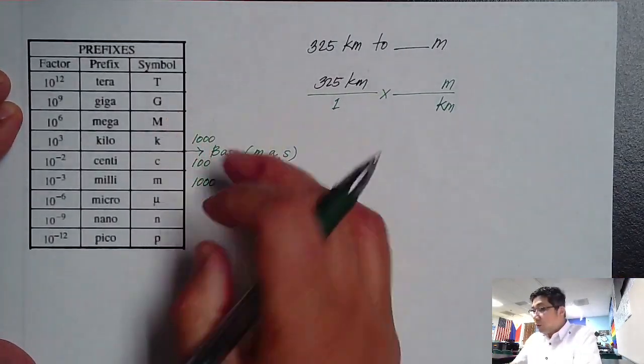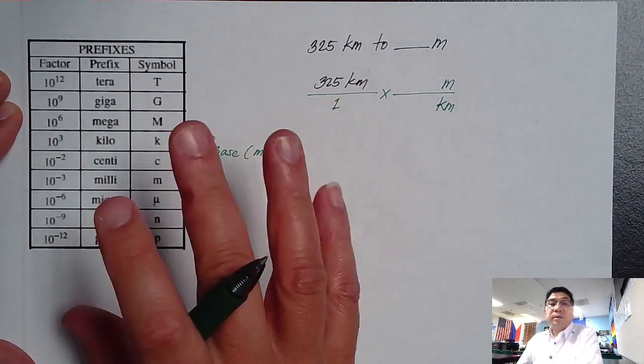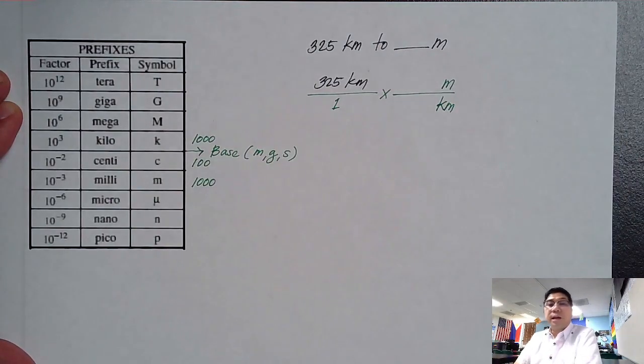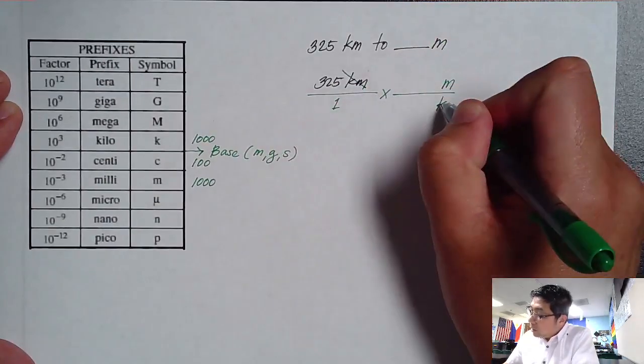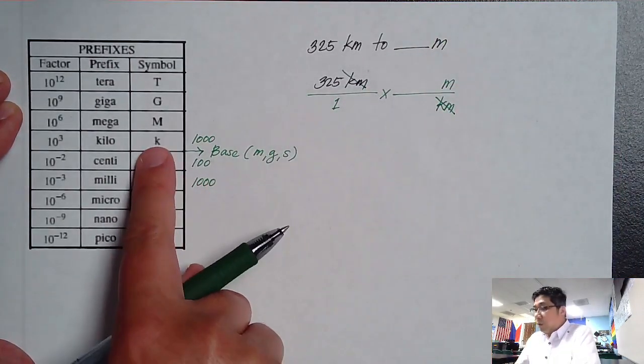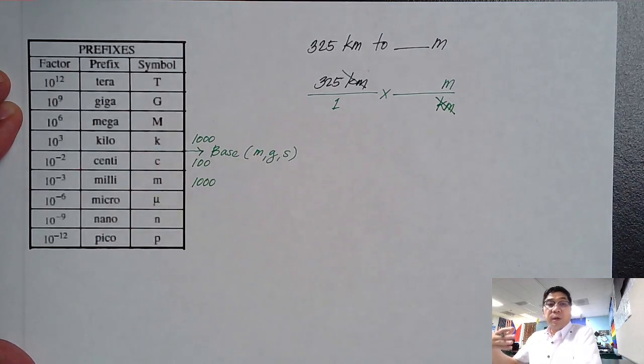If you notice on this table, I only converted kilo, milli, and centi because these are the three common prefixes that you will be using in this class. Now that I can cancel my kilometer, let's still analyze it. Kilometers - so kilometers is a thousand, meter is your base. Now, which one is greater? Is it kilometer or base?